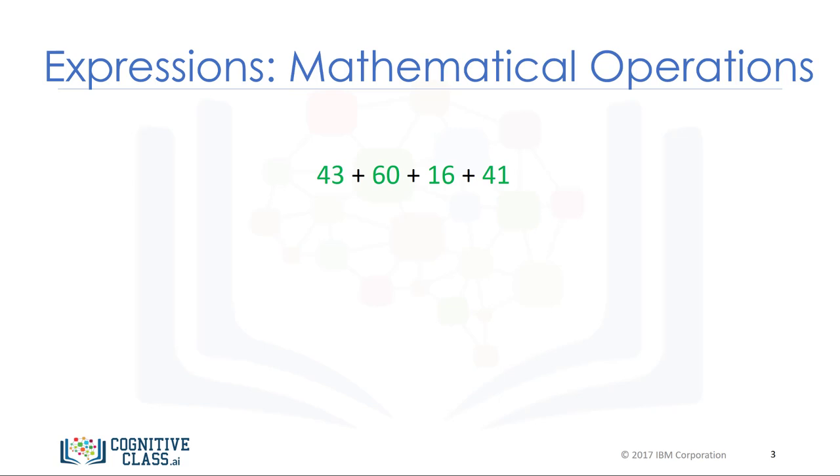For example, basic arithmetic operations like adding multiple numbers. The result, in this case, is 160. We call the numbers operands, and the math symbols, in this case addition, are called operators.